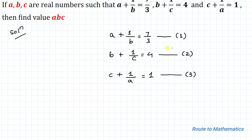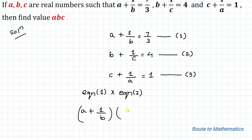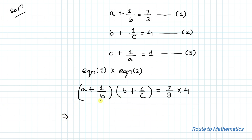The first step is to multiply Equation 1 with Equation 2. Multiplying (a + 1/b) with (b + 1/c), the right-hand side terms multiply to give 7/3 × 4. Expanding each term, we get ab + a/c + 1 + 1/(bc) = 28/3.